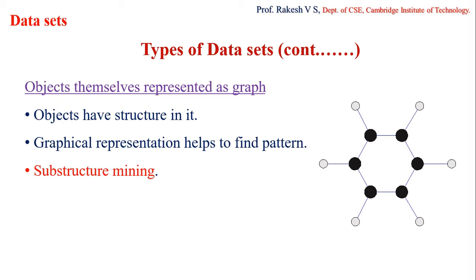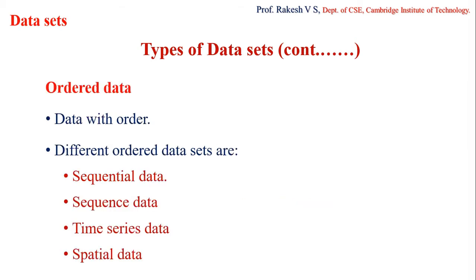In graph-based data, we consider two cases: relationships existing among objects, and data objects themselves represented as a graph. Now moving on to ordered data — here the attributes among objects have some kind of order, which can be with respect to temporal and spatial aspects. Types of ordered data include sequential data, sequence data, time series data, and spatial data.